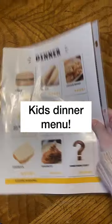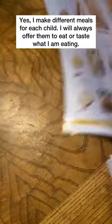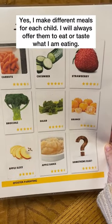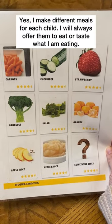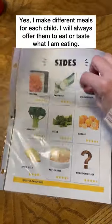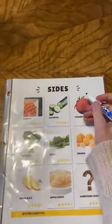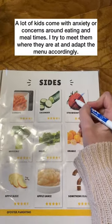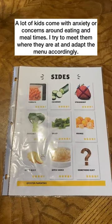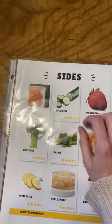I make these in Canva — I just pulled a template and I'll share a link to the template too. I do what we have, generally what I pick up at the grocery store every week. I put it in this little film so that I can write on it, so they can cross things out if we don't have them. It's important to find pictures of the basic food showing exactly what it'll look like on their plate.